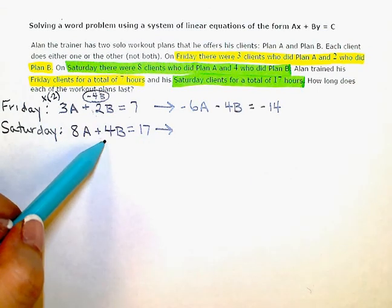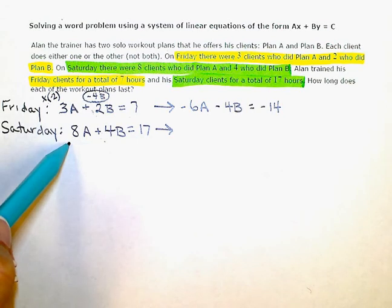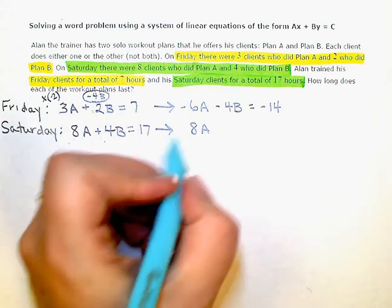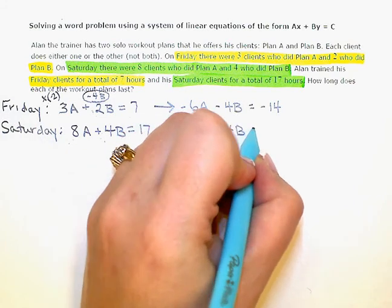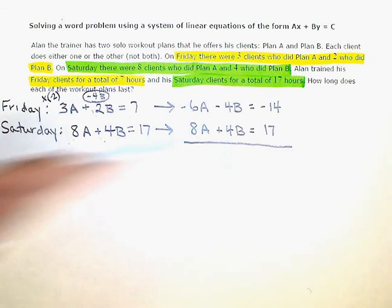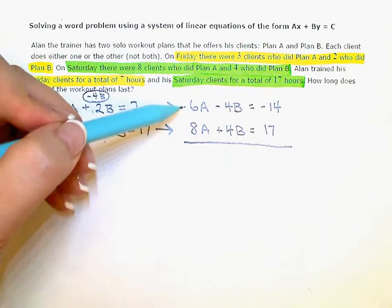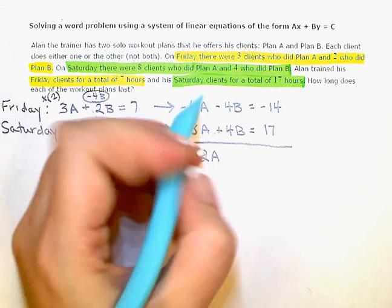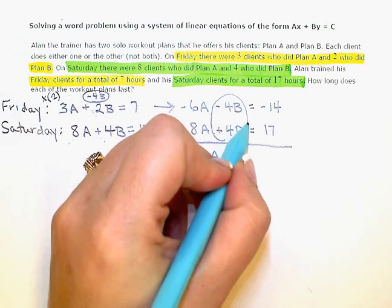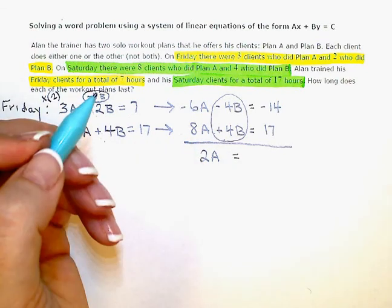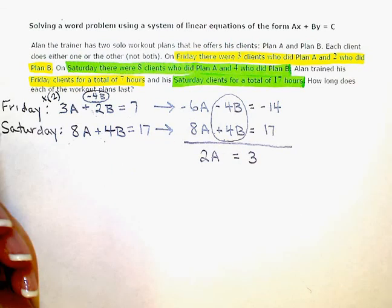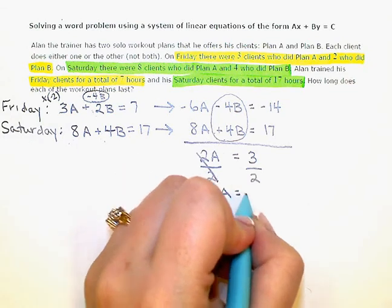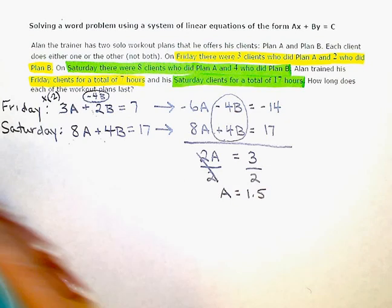This one already has the 4B, the exact opposite, so I don't need to multiply anything times this equation here. I'm just going to rewrite it underneath my other one. So 8A plus 4B equals positive 17. Now I'm going to just combine my like terms using column additions. Negative 6A plus 8A is 2A. Negative 4B plus 4B, that's going to zero out. That's my elimination right there. And that's going to be equal to negative 14 plus 17 is positive 3. Dividing both sides by 2, I get A equals 3 halves of an hour or 1.5 hours.